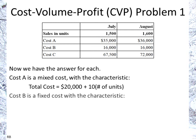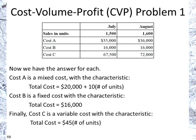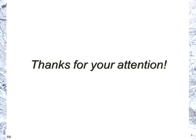So now we have the answer for each cost. Cost A is a mixed cost: $20,000 plus $10 times the number of units. Cost B is a fixed cost with a total cost of $16,000. And finally, cost C is the variable cost: total cost equals $45 per unit times the number of units. Hopefully that helped — thank you for your attention.